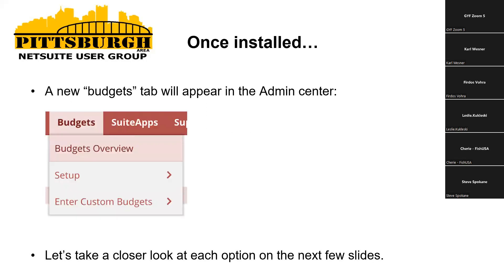Once you install this, you're going to see a new budget tab that appears in the admin center. It has three basic components: your budget overview, your setup section, and an area where you can enter the custom budgets. The majority of the rest of this presentation is going to be focused on the setup. I will talk about the budget overview in the next slide. There are two sub-components in setup: a budget control template and your budget preferences. The enter custom budgets area is just if you want to key in your custom budget expense rather than do a CSV upload.